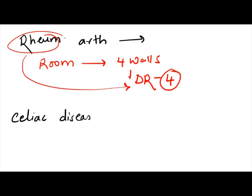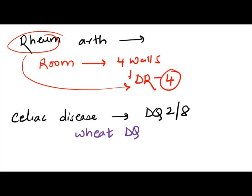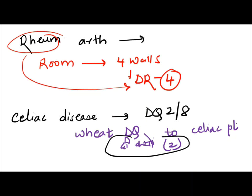The HLA subtype associated with celiac sprue or celiac disease is DQ2. In celiac disease, wheat is avoided. To remember this: wheat DQ — the celiac patient avoids wheat and is associated with DQ2. So DQ2 is celiac disease.